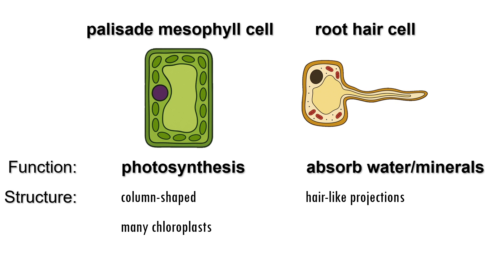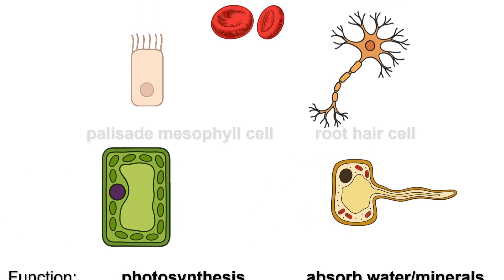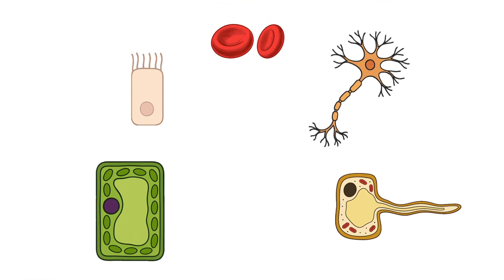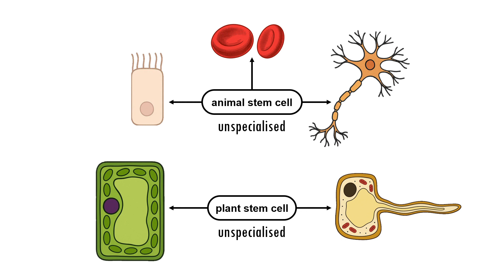In both animals and plants, these specialized cells are produced through the differentiation of stem cells. Stem cells are unspecialized cells that can divide repeatedly by mitosis and have the potential to become different types of specialized cells. We'll take a closer look at stem cells in another video.